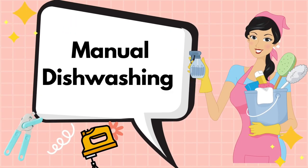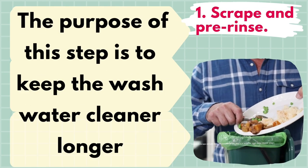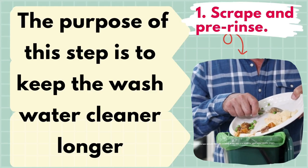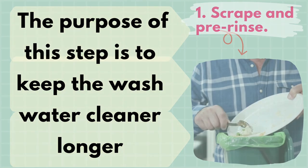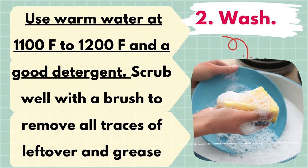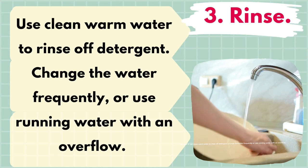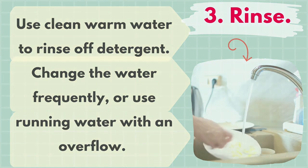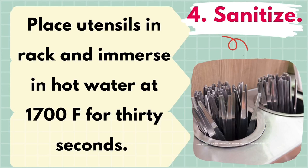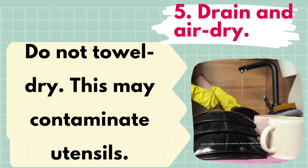Manual Dishwashing. Number 1: scrape and pre-rinse — the purpose of this step is to keep the wash water cleaner longer. Number 2: use warm water at 110°F to 120°F and a good detergent; scrub well with a brush to remove all traces of leftover food and grease. Number 3: use clean warm water to rinse off detergent; change the water frequently or use running water with an overflow. Number 4: place utensils in a rack and immerse in hot water at 170°F for 30 seconds. Number 5: drain and air dry — do not towel dry, as this may contaminate utensils.